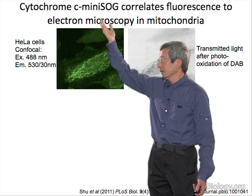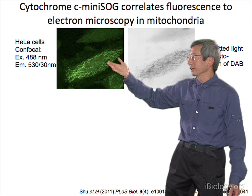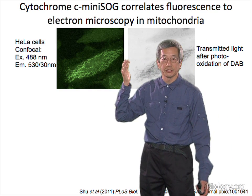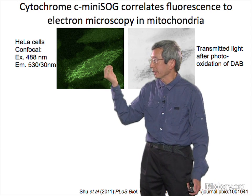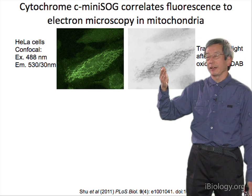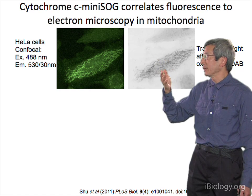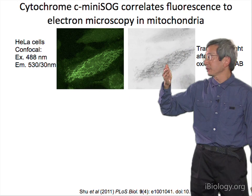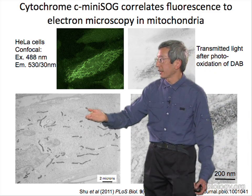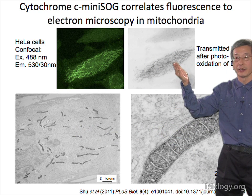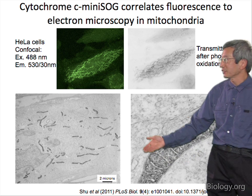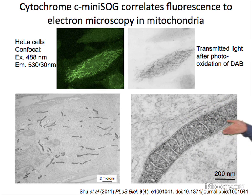Here we've transfected in Mini-SOG and targeted the mitochondria by fusing it to a piece from cytochrome C, which is a well-known mitochondrial protein. We can see those mitochondria by fluorescence — they look like regular mitochondria; in a live cell they look like little wispy threads. The crucial thing is that we can fix the cells, turn up the light, bubble pure oxygen to help efficiency, and include diaminobenzidine. Wherever there was fluorescence before, we turn it into a black precipitate. That black precipitate can be looked at in the electron microscope at higher and higher magnification. This is a blowup of one of those mitochondria down to the scale where you can see 200 nanometers — we can see all the cristae and the spaces between the inner and outer membrane. This is the classic appearance of a mitochondrion from a textbook, but this mitochondrion has been picked out genetically.